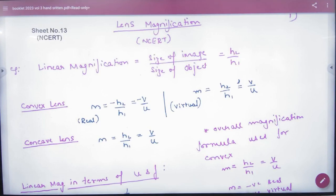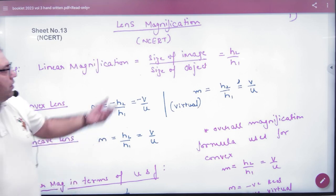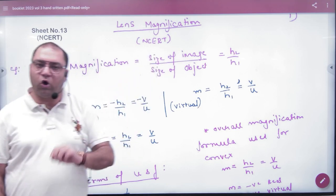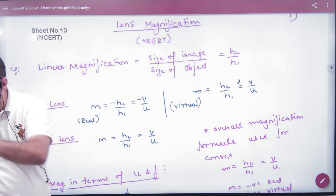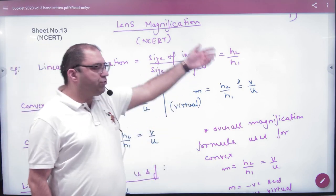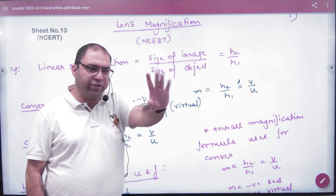What has been told about the magnification of lens? The magnification of lens was done in 10th class. Linear magnification is size of image by size of object. Height of image by height of object is magnification. We represent M from M, and H2 by H1 is height of image by height of object.